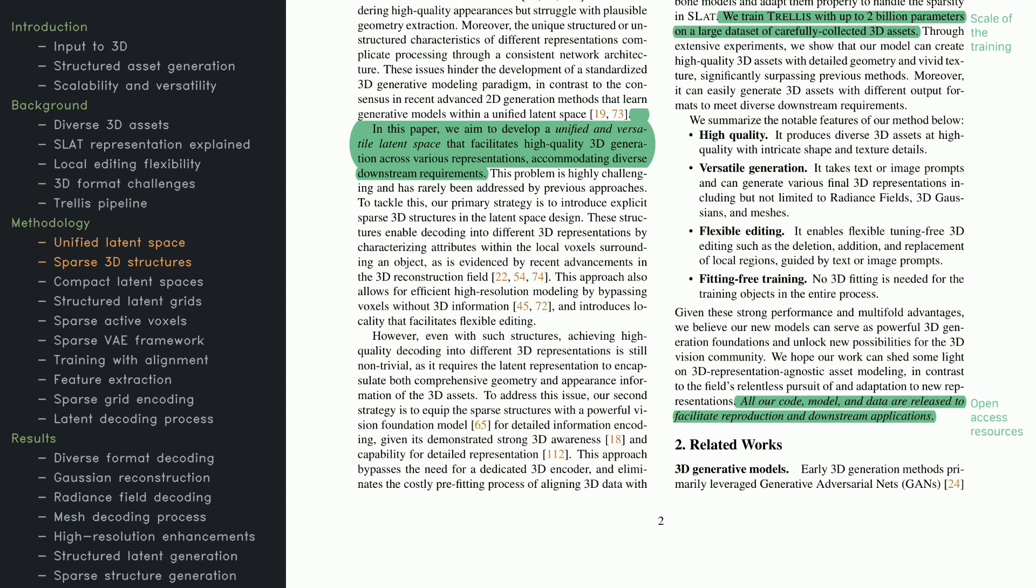This part expands on creating a versatile 3D latent space that maintains strong performance across diverse tasks. The key idea is to use sparse 3D structures that efficiently handle different representations. Pre-trained vision models are used to capture fine geometry and appearance, removing the need for specialized 3D encoders. That cuts down on complexity and training overhead. The method delivers four main features: high-quality, versatility, flexible editing, and training that doesn't require fitting an entire 3D model beforehand. Everything is open-sourced—models, code, data—so you can dive in, tweak, and use it for various applications.